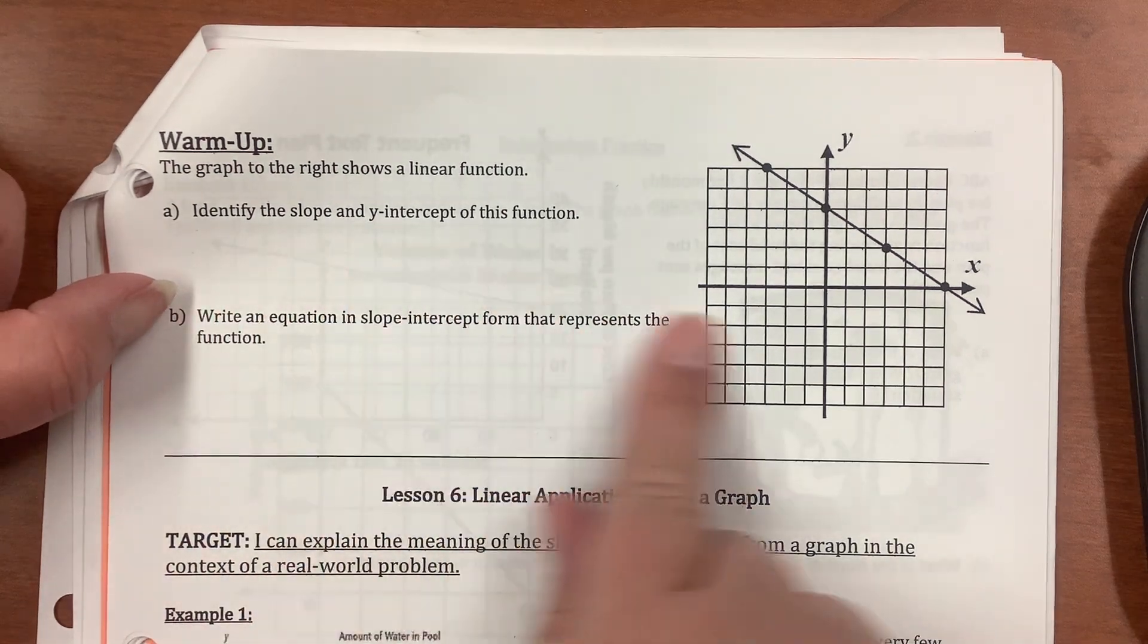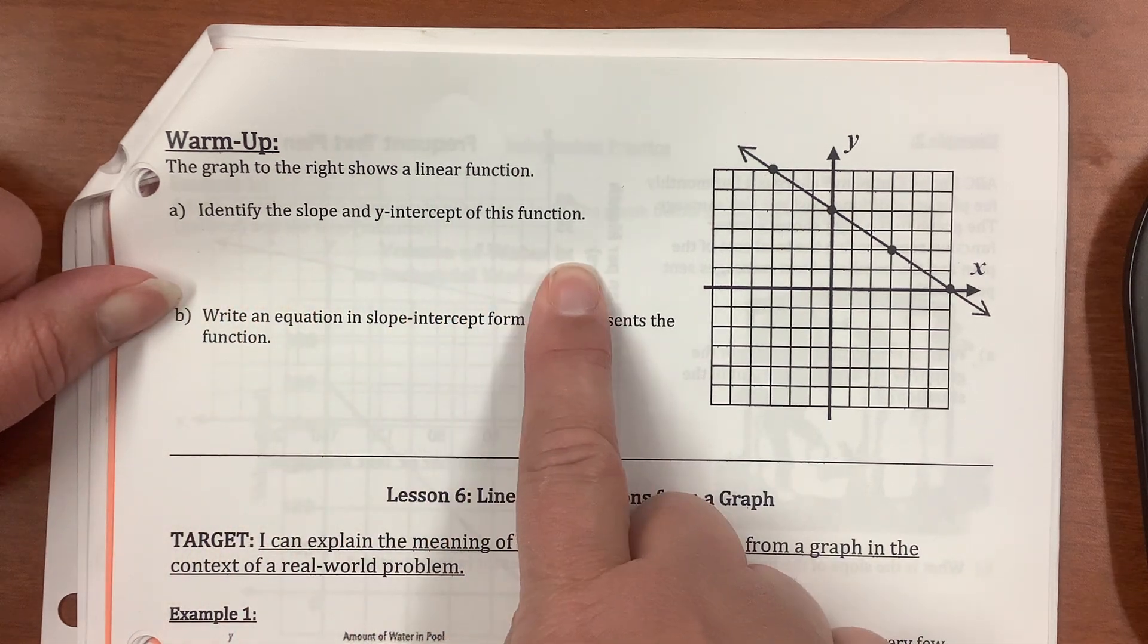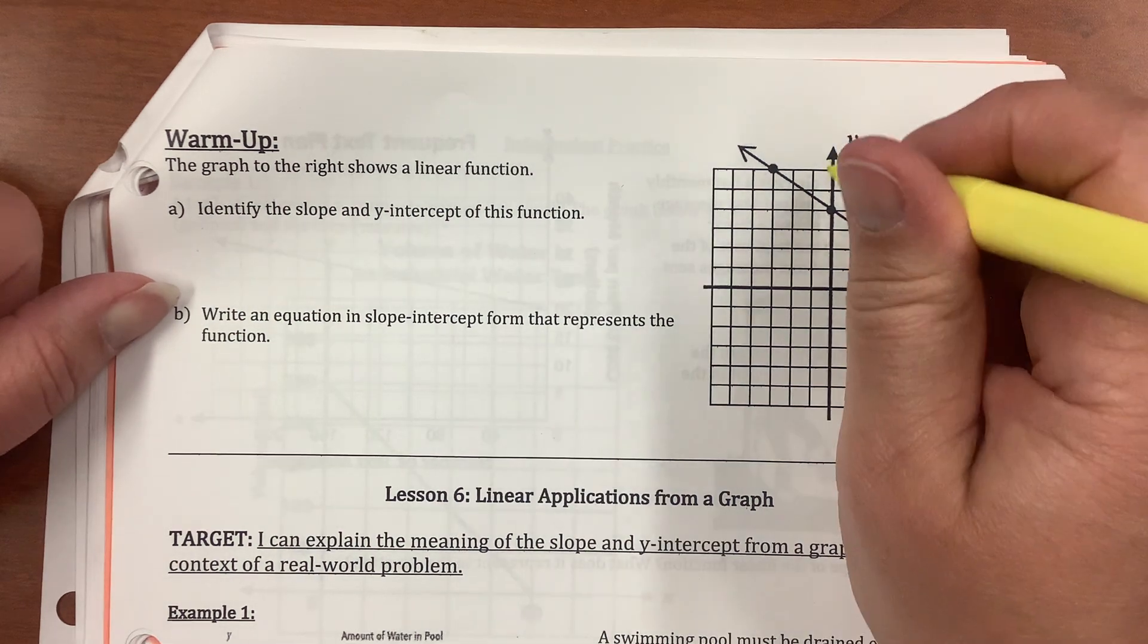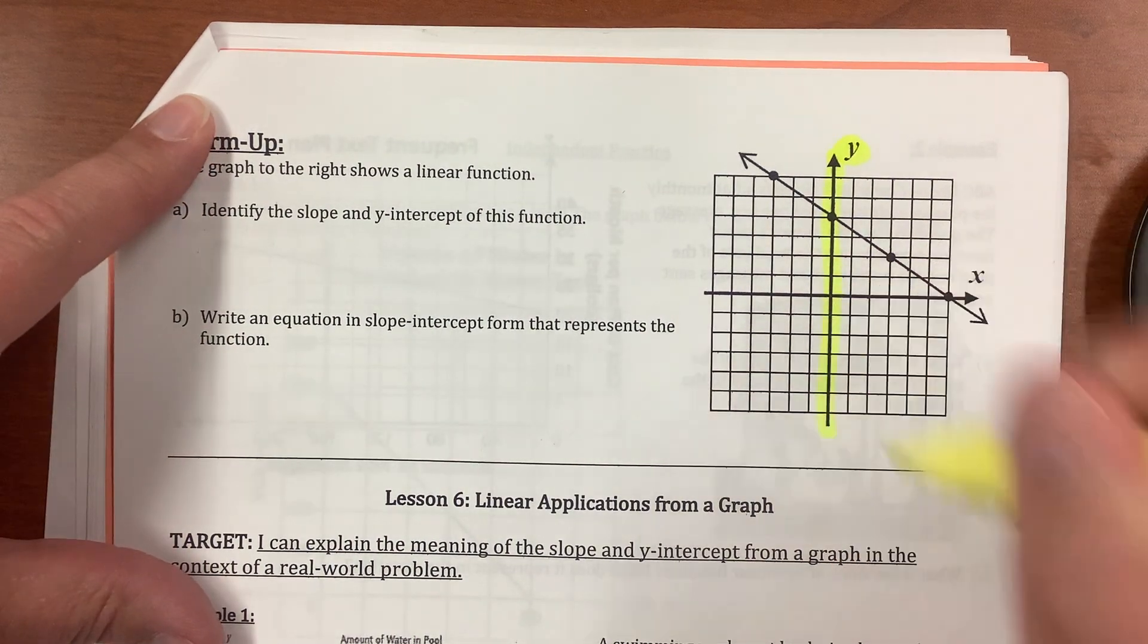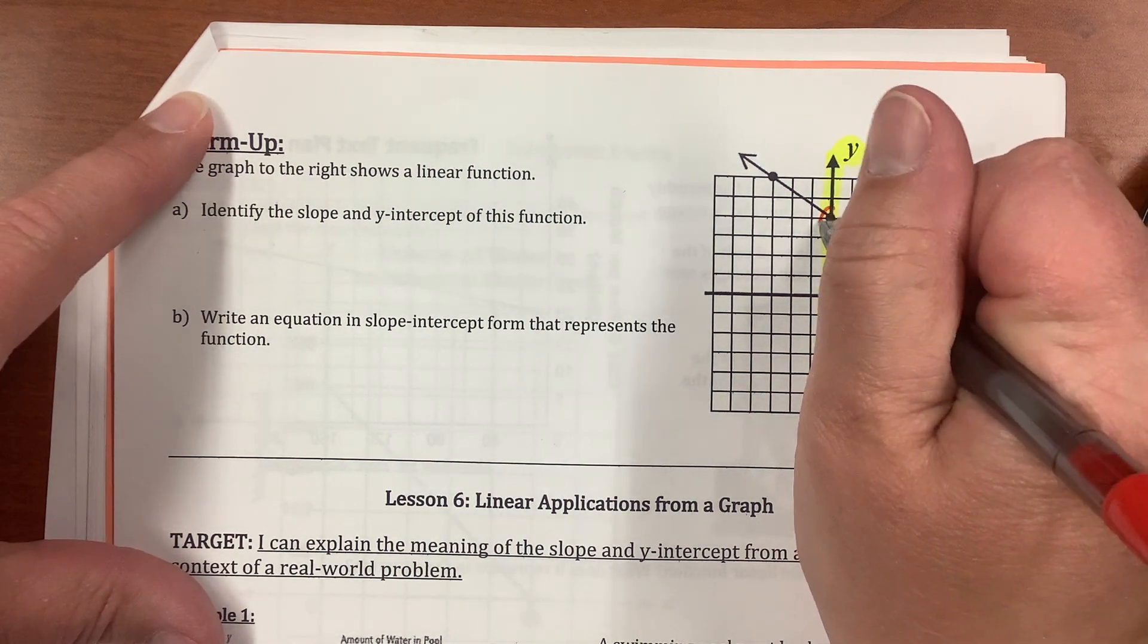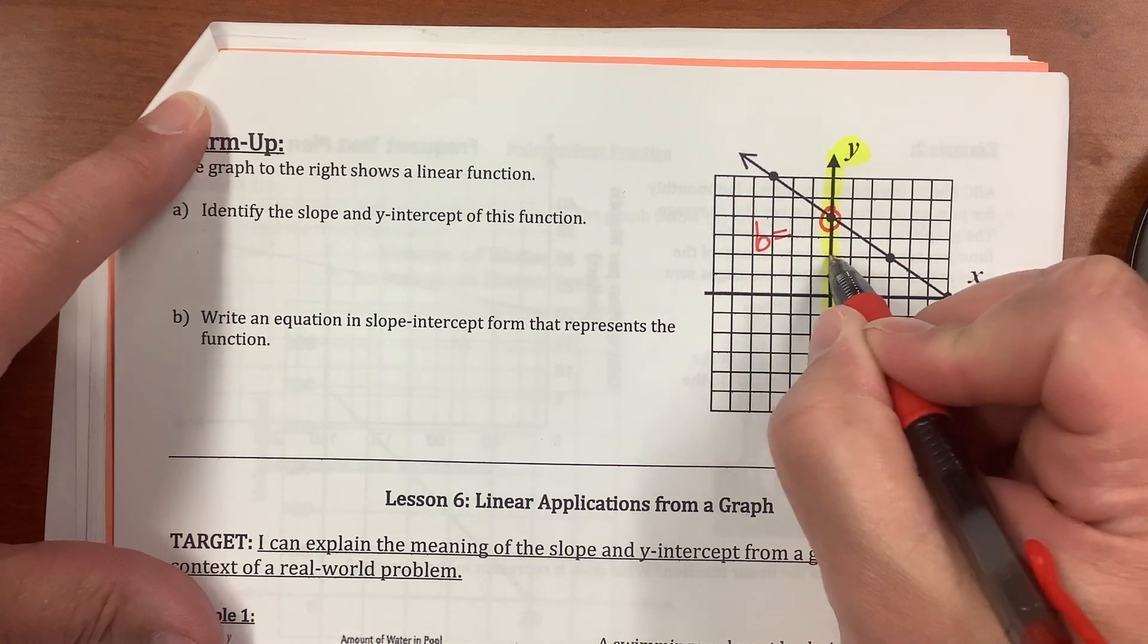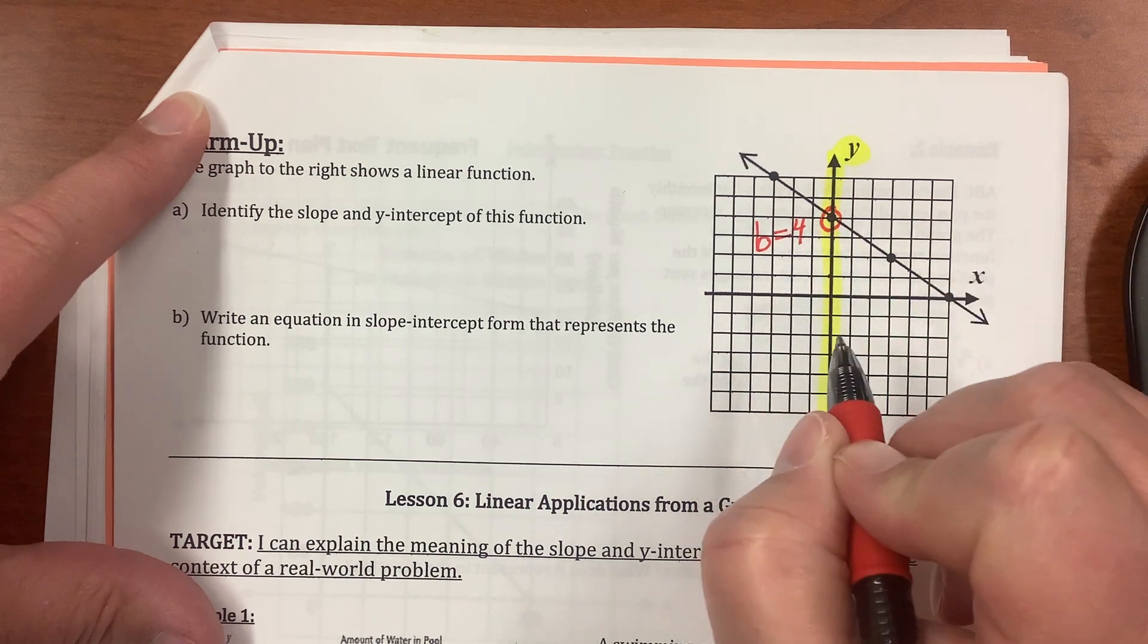So usually from a graph you can find slope how? Well, I need to identify the slope and y-intercept. First, y-intercept. Here's my y, and here's my y-axis, and right here at b equals 1, 2, 3, 4.